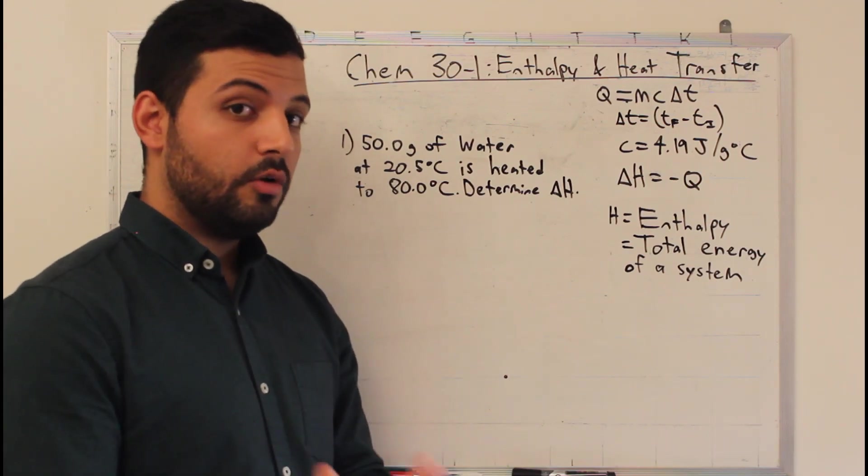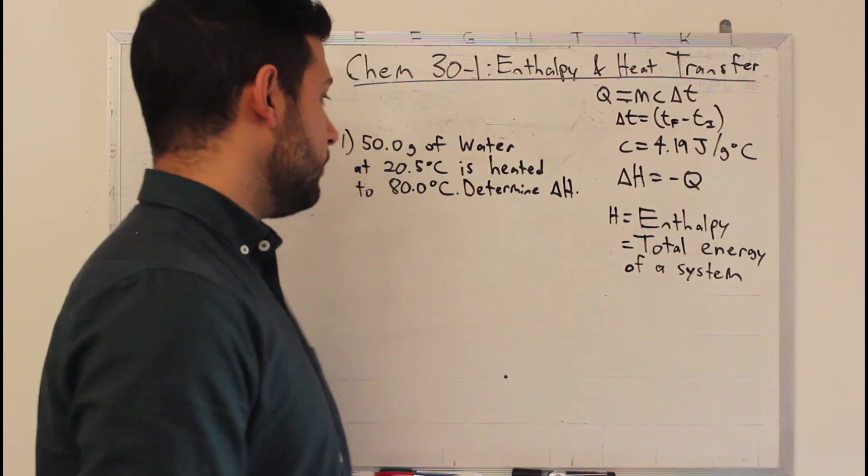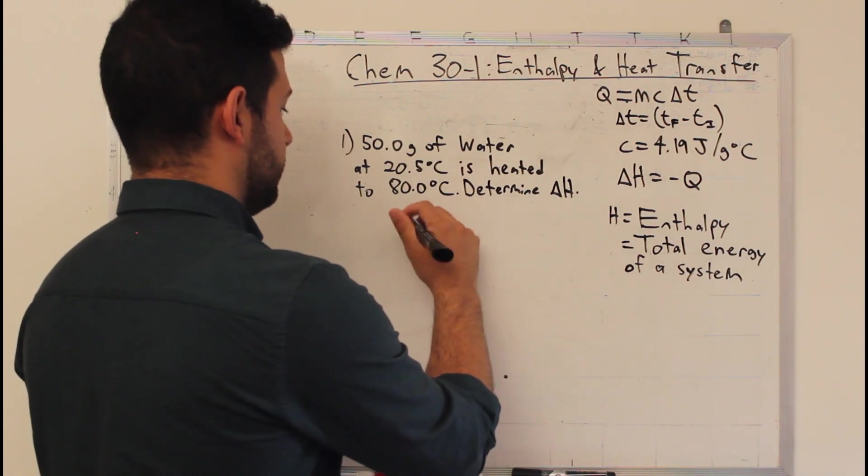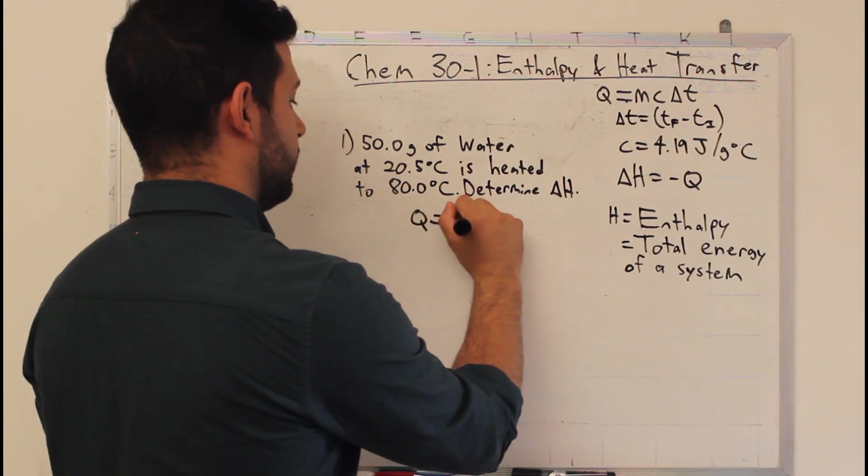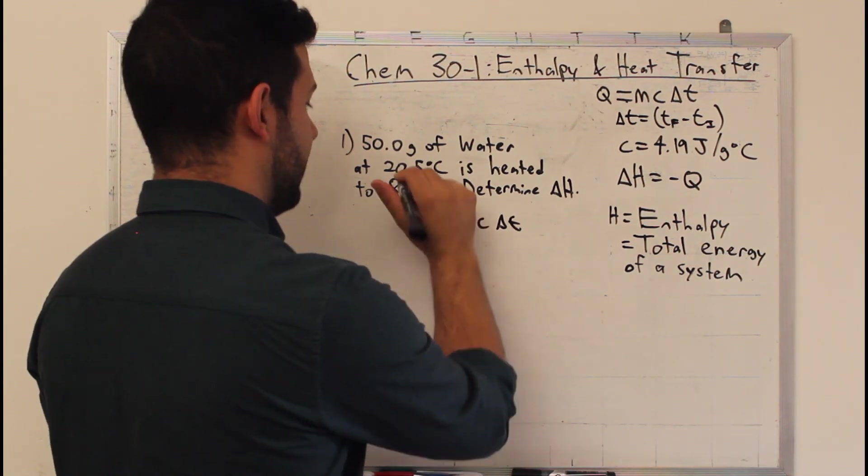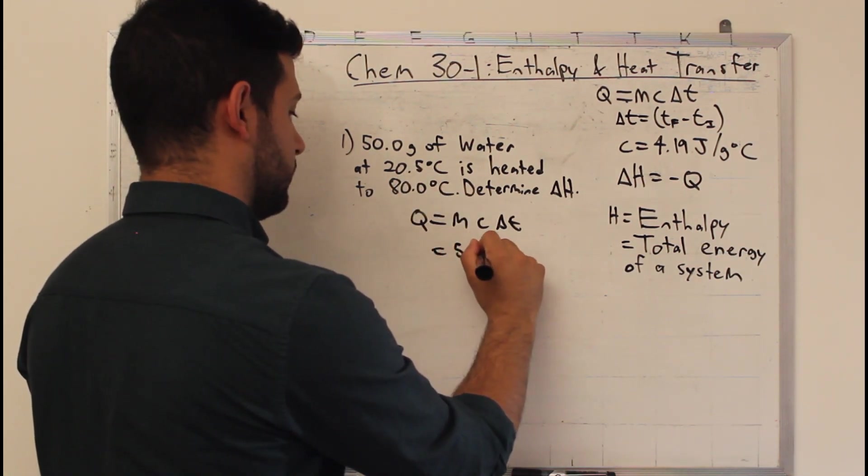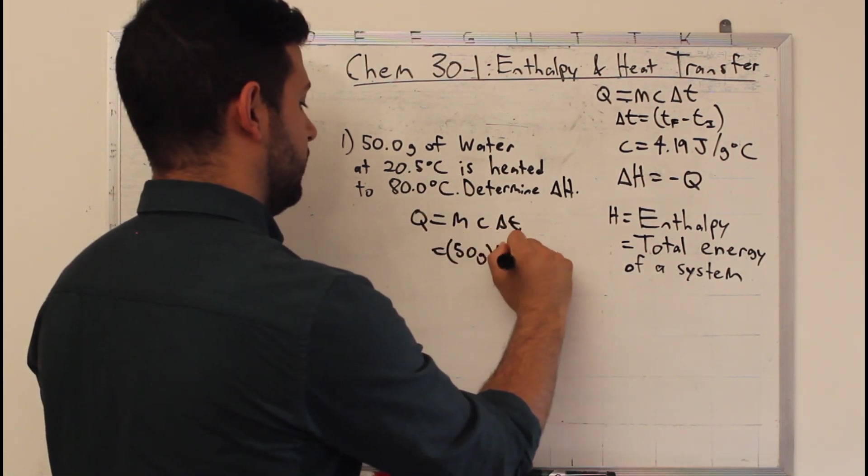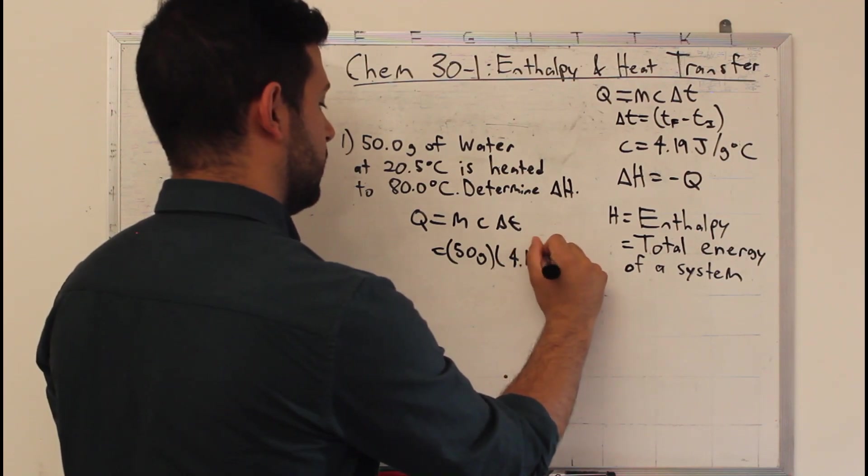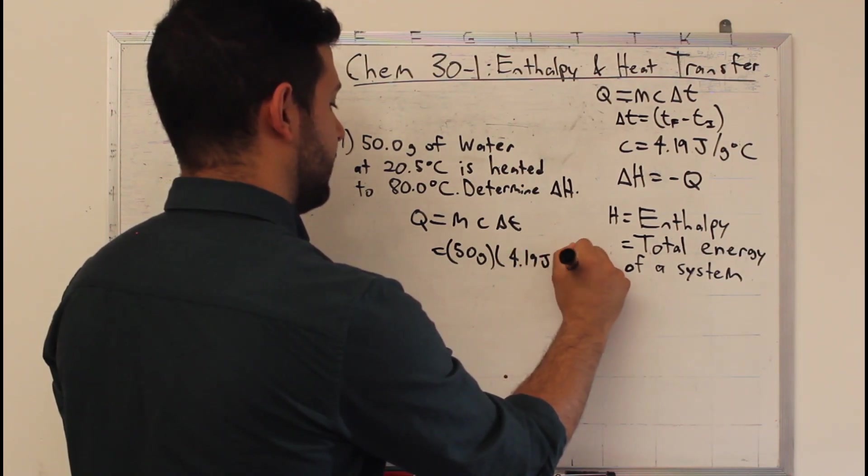So, we go back through this question. Q equals MC delta T. Mass of water is 50 grams. C is 4.19 joules per gram degree Celsius.